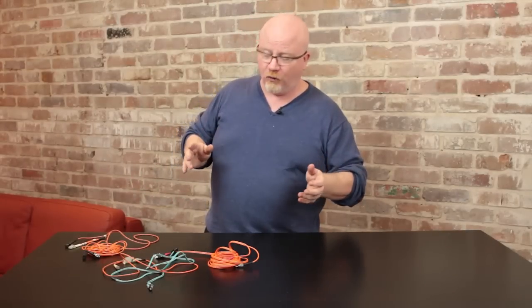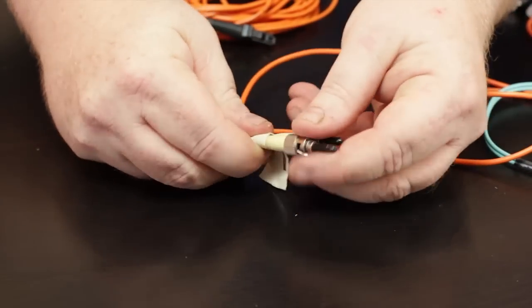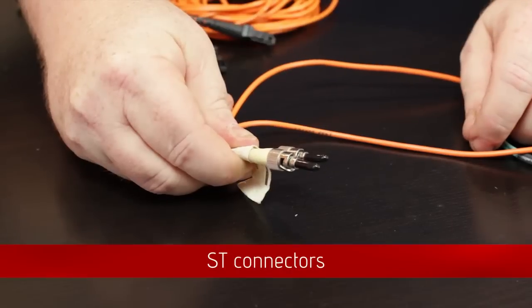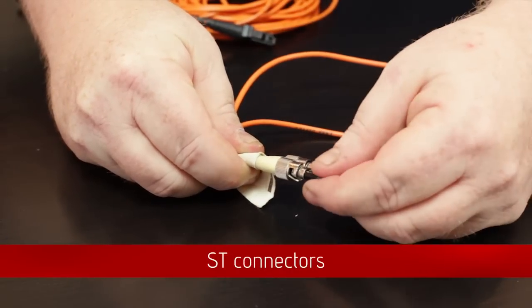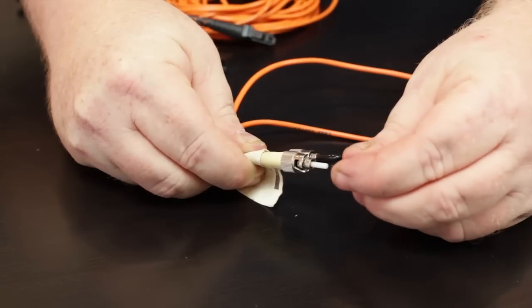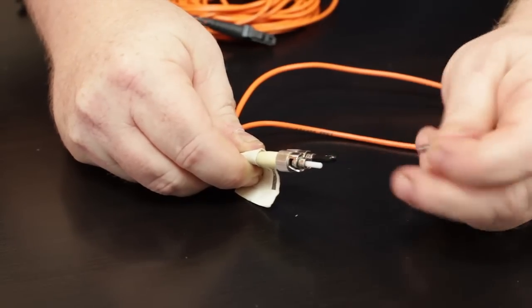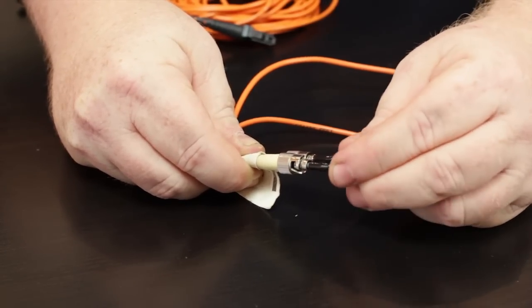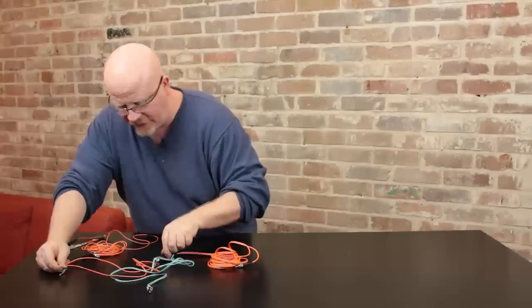Let's start with the oldie goldies. This round connector right here is an ST connector. Now, these little black things are actually just protectors. In the middle of that white thing is the actual fiber optic itself. It's way too small to even show on this camera. STs are round connectors.